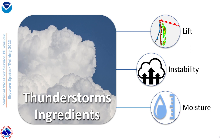That's the lift. Instability is a measure of how fast a parcel of air is moving upwards within a cloud. The more unstable, or the more instability there is, the faster that chunk of air can rise up through a thunderstorm.